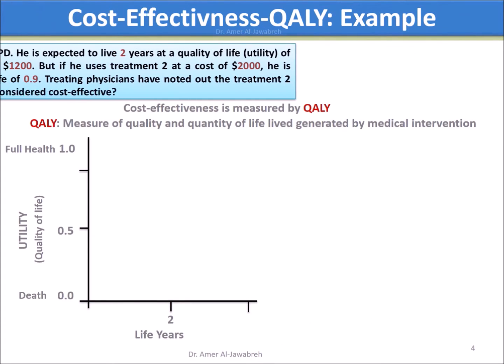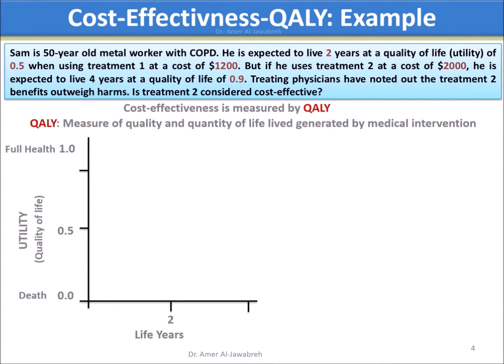Sam is a 50-year-old metal worker with COPD. He is expected to live two years at a quality of life of 0.5 when using Treatment 1 at a cost of $1,200. But if he uses Treatment 2 at a cost of $2,200, he is expected to live four years at a quality of life of 0.9. Physicians have noted that Treatment 2 benefits outweigh harms. Is Treatment 2 considered cost effective?